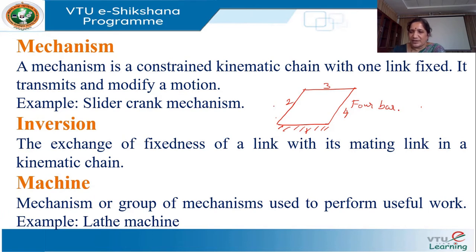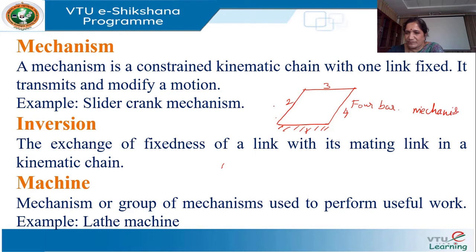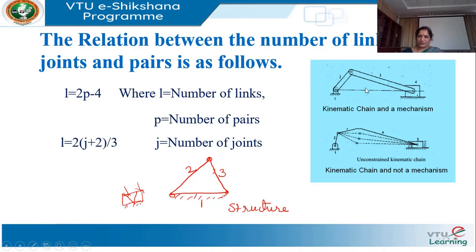This is a 4-bar mechanism. Please remember: a mechanism means any one of the links in a kinematic chain is fixed. For example, in a slider crank mechanism with 4 links — link 1, 2, 3, 4 — link 1 is fixed, and that is why we call it a mechanism.